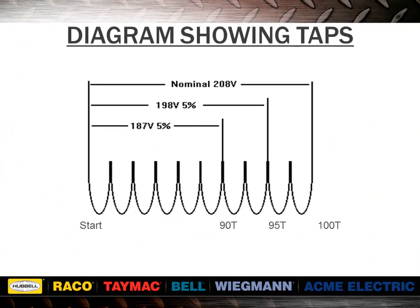Here we see an example of using taps. The transformer is rated primary 208 volts, secondary 120 volts. The condition: the supply voltage is low at only 187 volts. If the unit has no taps, then the output would be only 108 volts, due to the fixed ratio of the unit. If the unit has taps, use the tap voltage which most closely matches the available supply voltage. This will result in the output being at or near the rated voltage. Taps cannot correct a fluctuating voltage problem. Fluctuating voltages may require a constant voltage regulator.